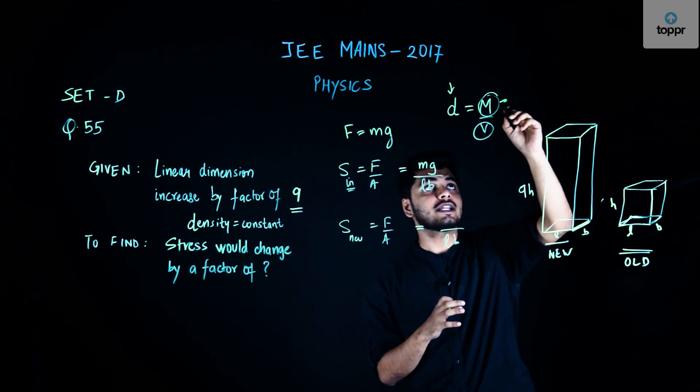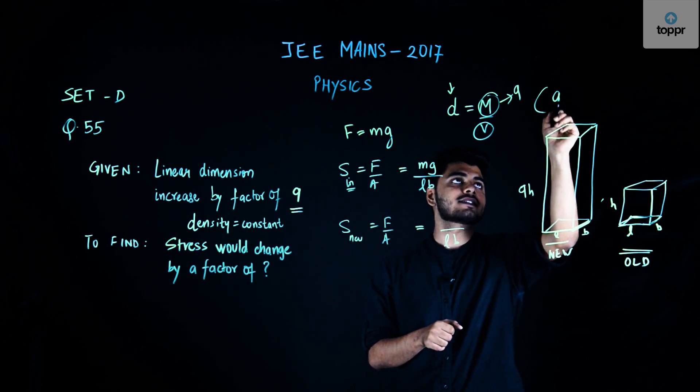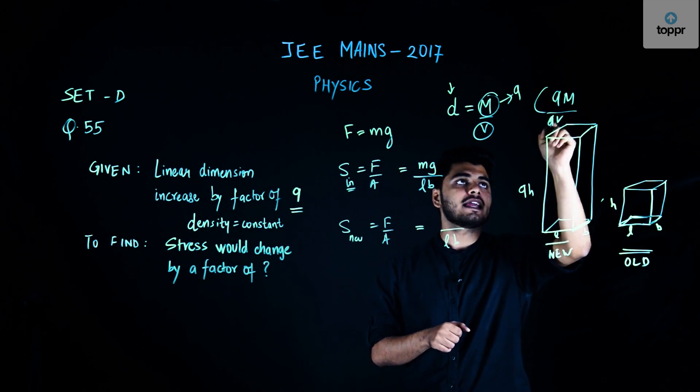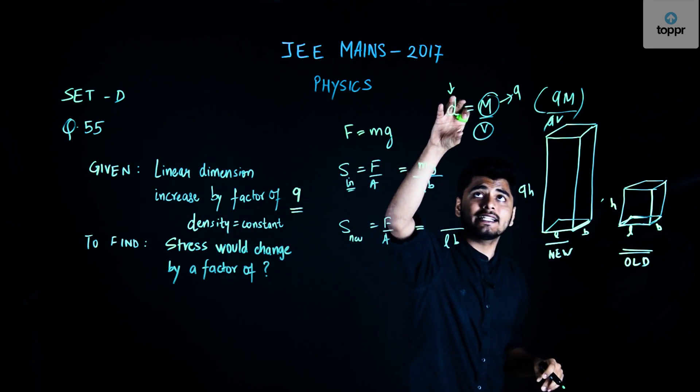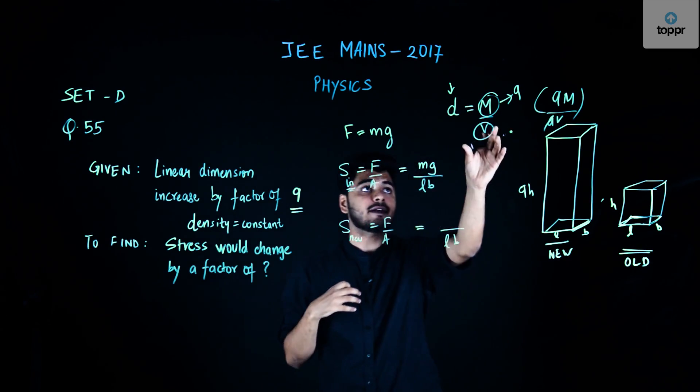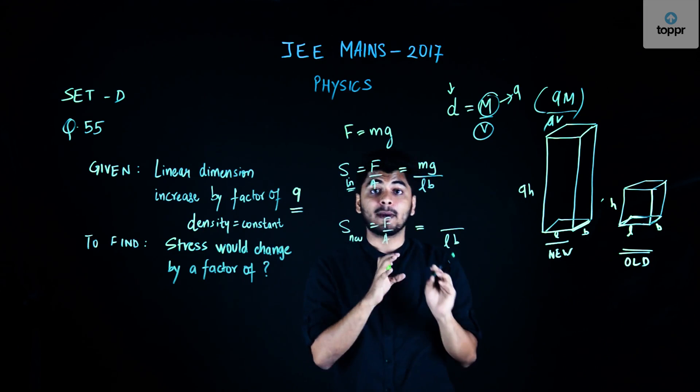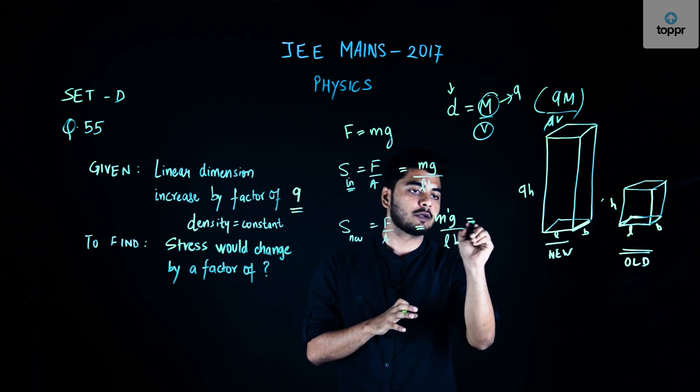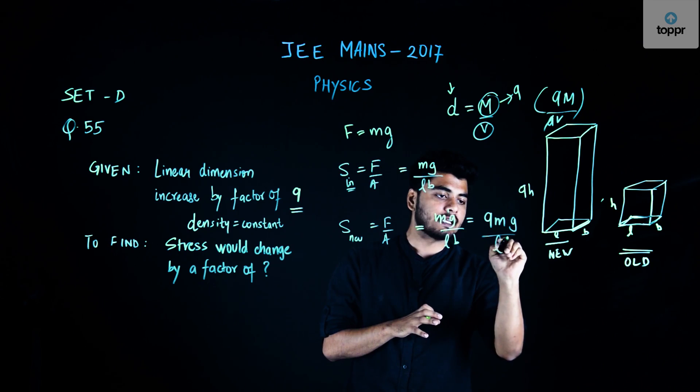How much should it increase? It should increase by a factor of 9. My new mass is 9M and my new volume is 9V. The 9 gets cancelled and density remains the same. So density constant means mass must increase by a factor of 9 as volume increased by a factor of 9. So the new stress: M'g/(L × B) = 9Mg/(L × B).